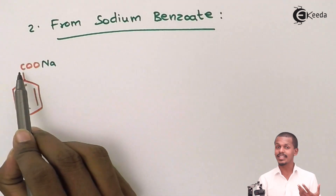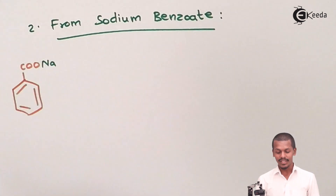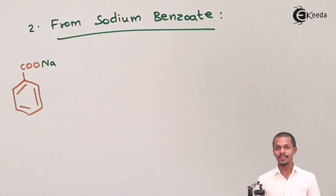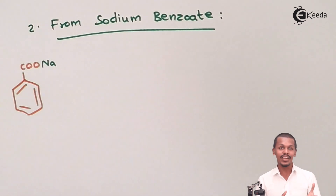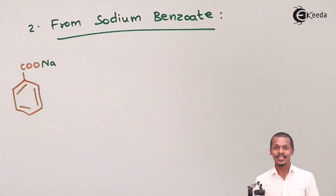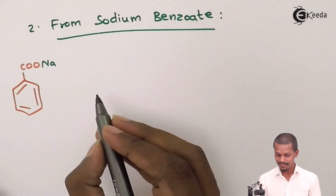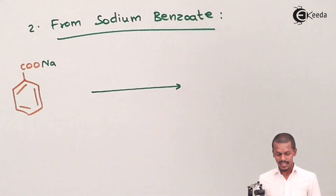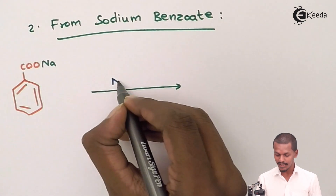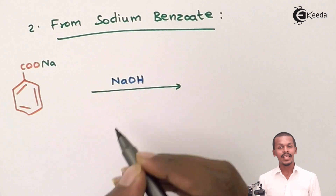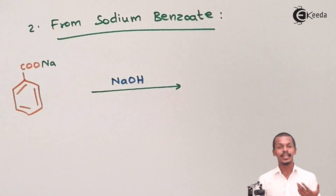Benzene should not contain the carboxyl group. So we have to remove this carbonyl group in the form of carbon dioxide. The process where carbon dioxide is removed is basically known as decarboxylation. For this we have to use some special reagents — a base, which is NaOH, and also CaCO₃.